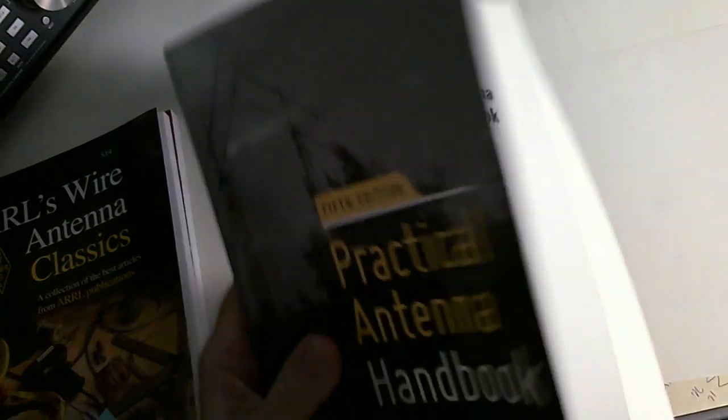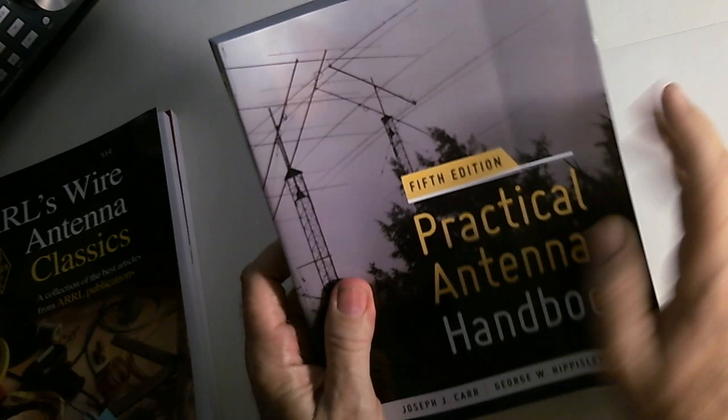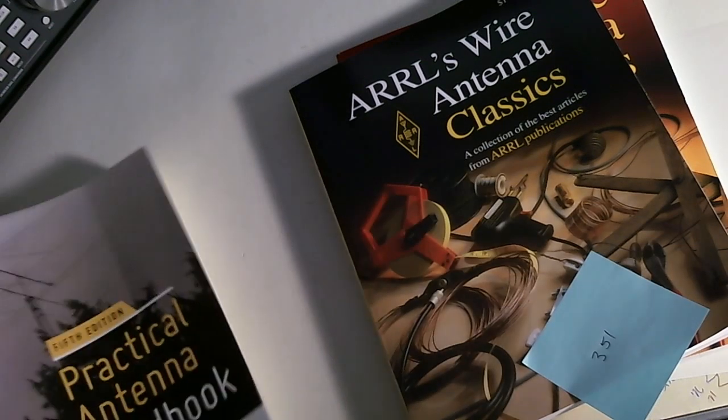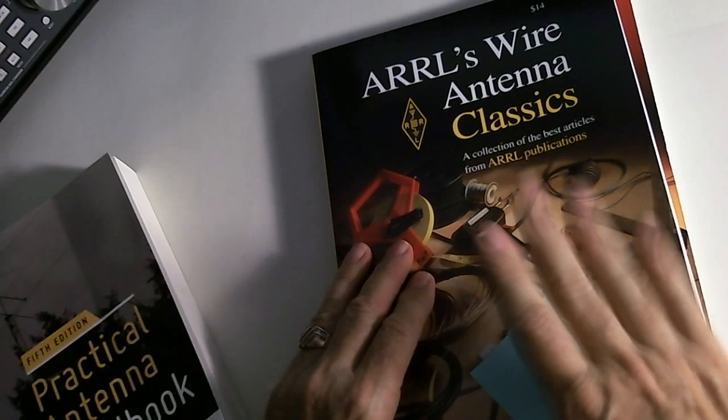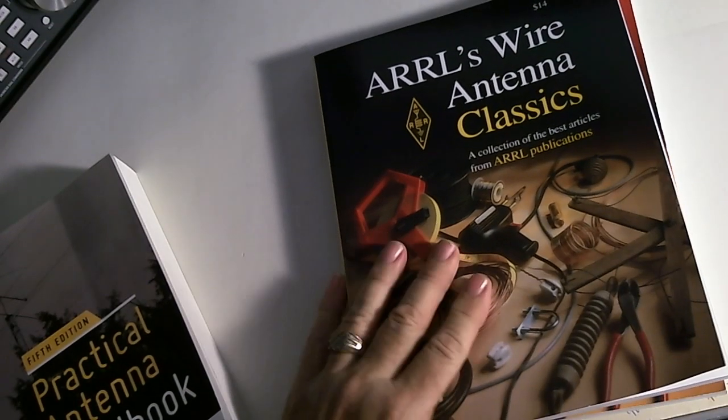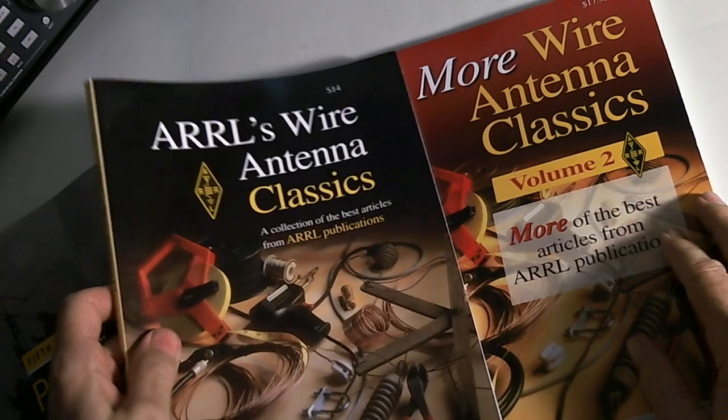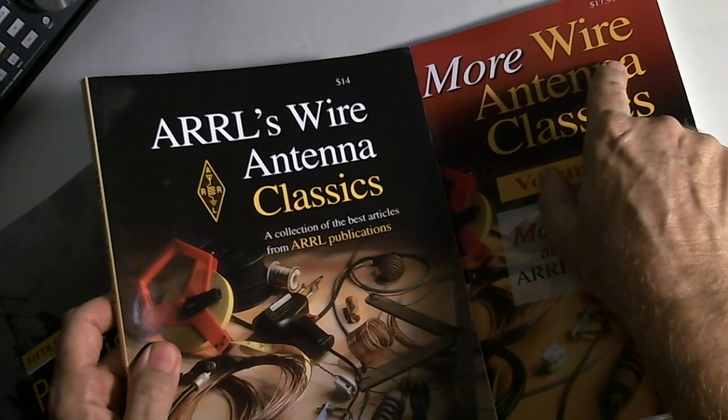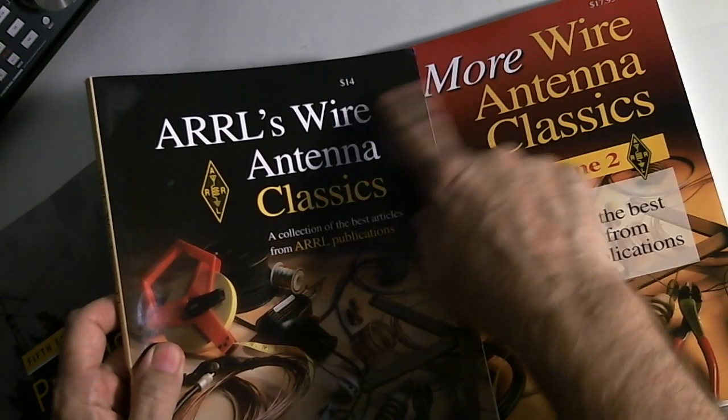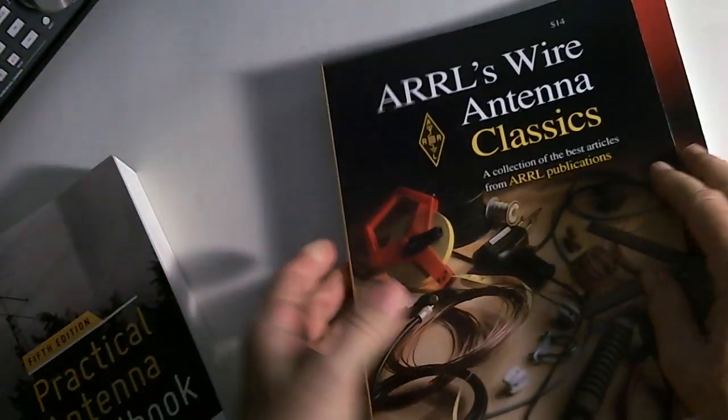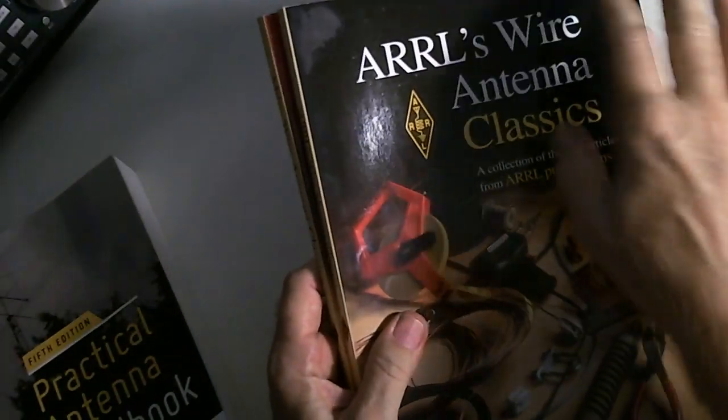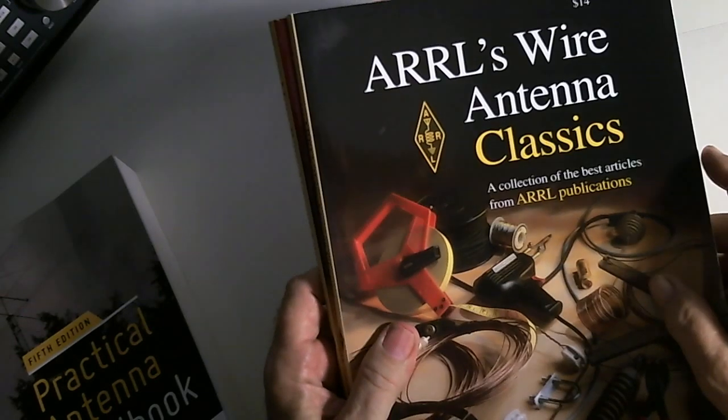So if you're interested in the theory of antennas, this is a great book to get. If you are only interested in building antennas and you don't give a hoot why they work, you just want to set them up, these are the books to get, these two books. And together these are like 32 dollars together, this one's 14 and this one's 18 dollars retail, and of course they're cheaper than that on Amazon.